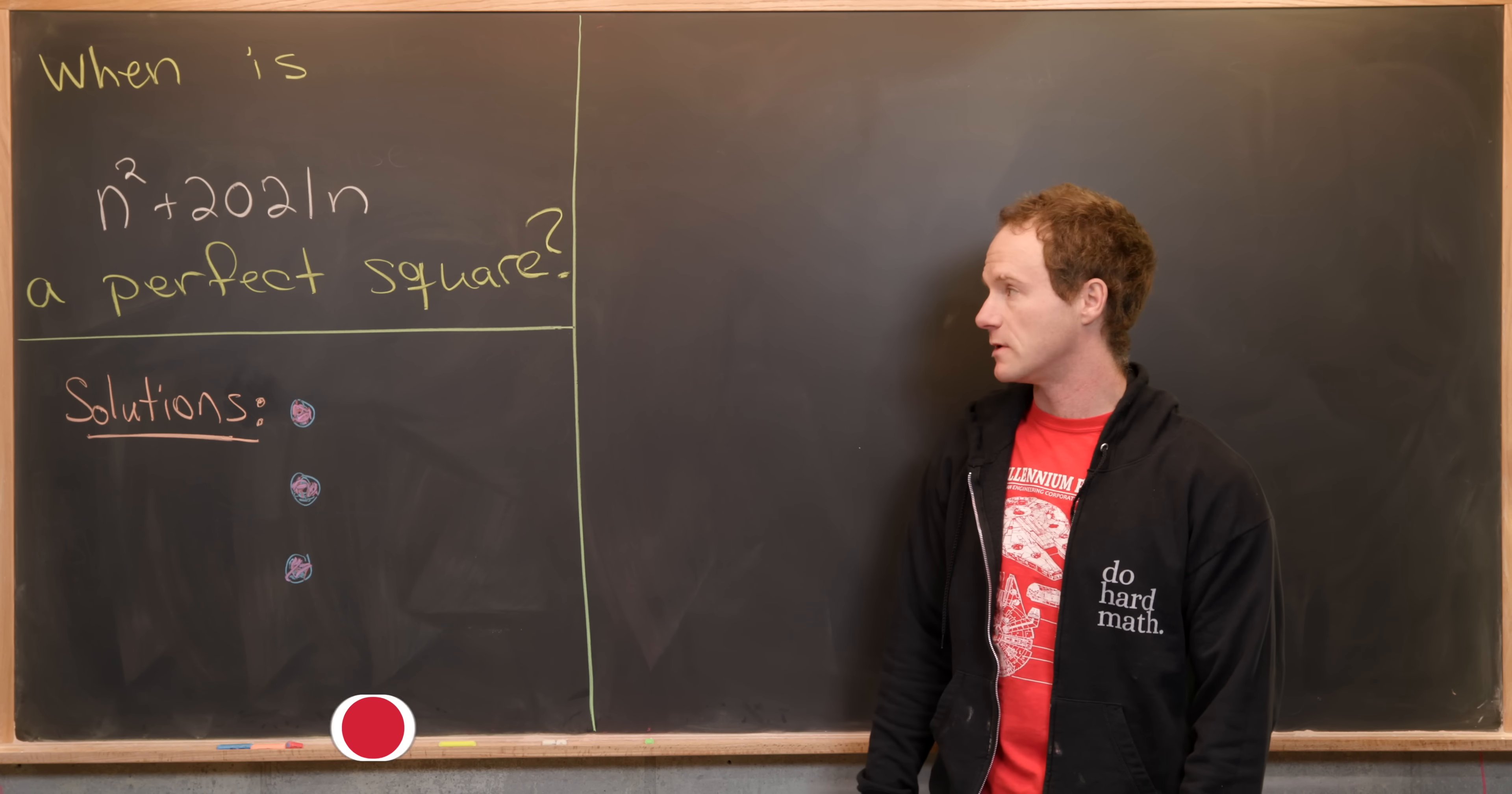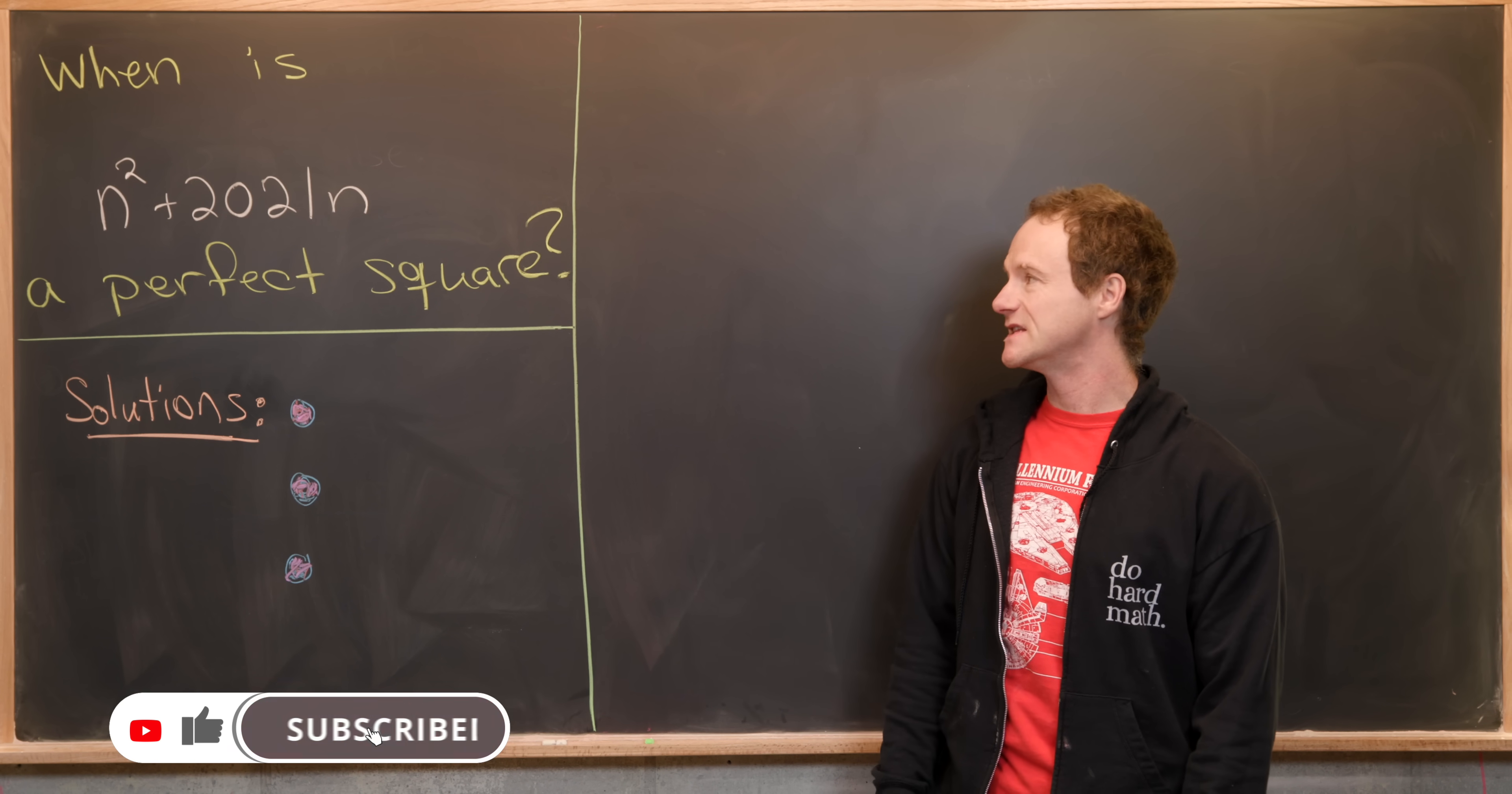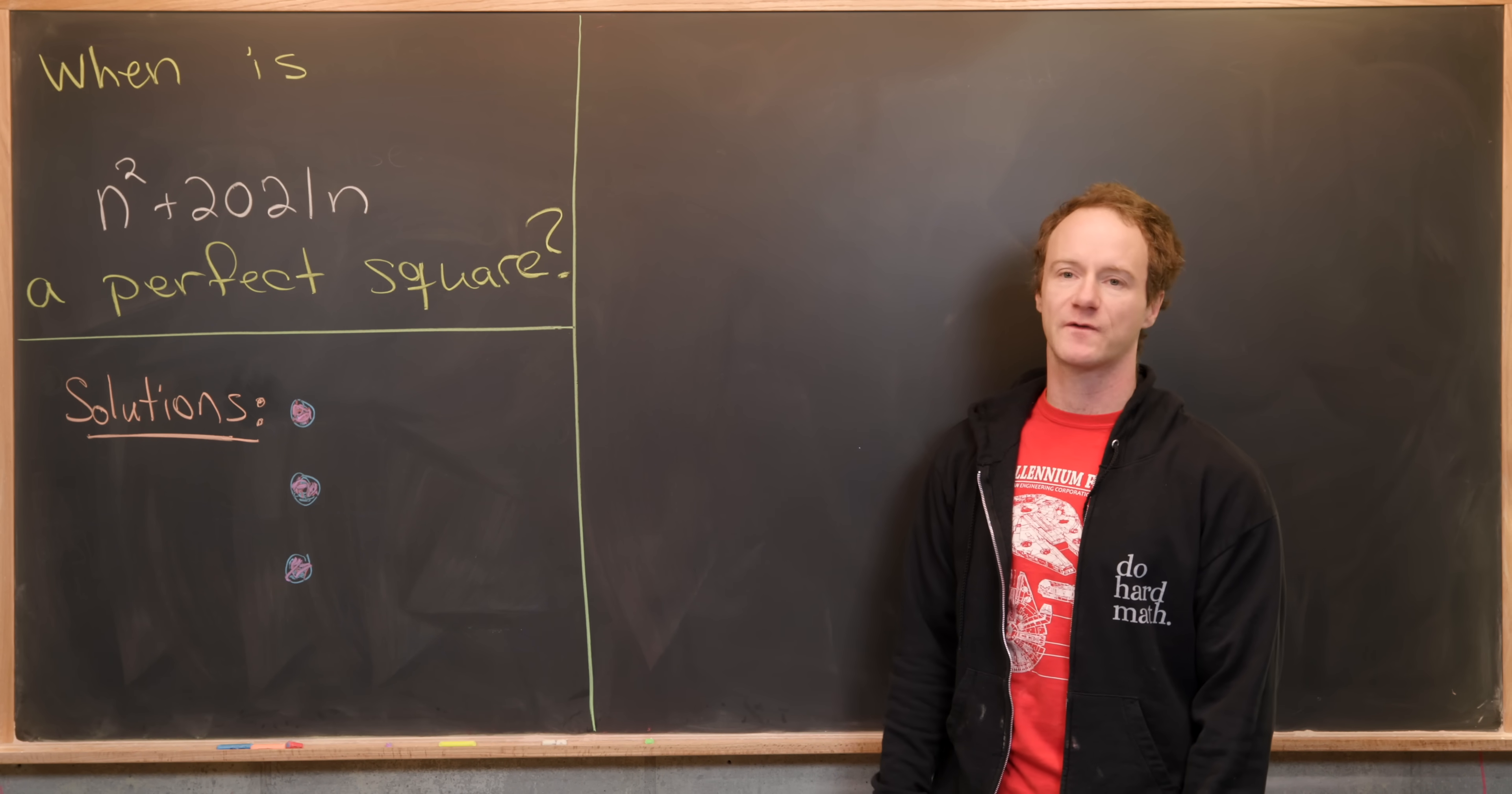Here we're going to look at a nice little number theory problem. So our goal is to answer the question: when is n² + 2021n a perfect square?